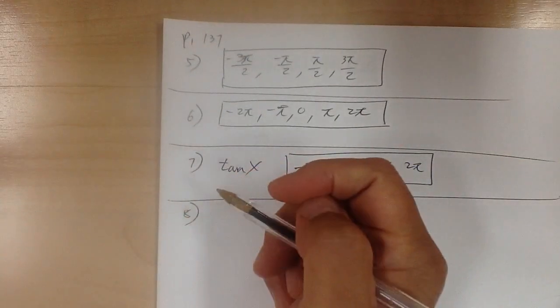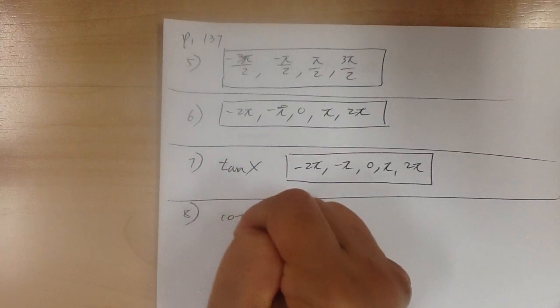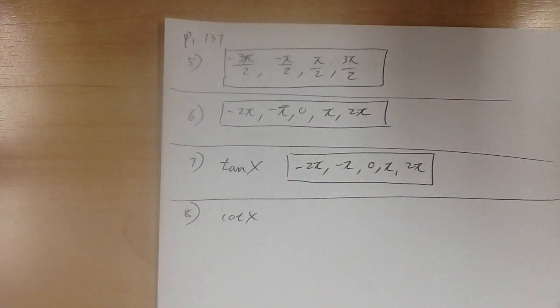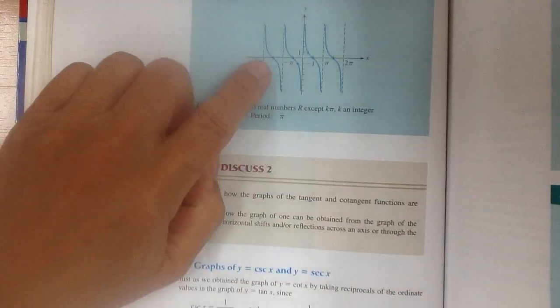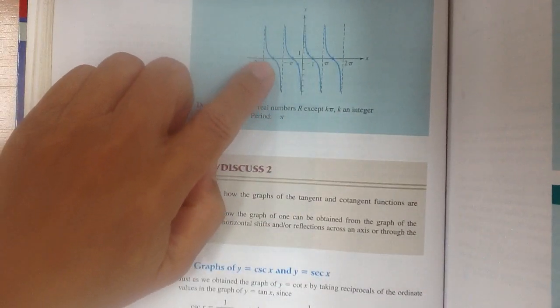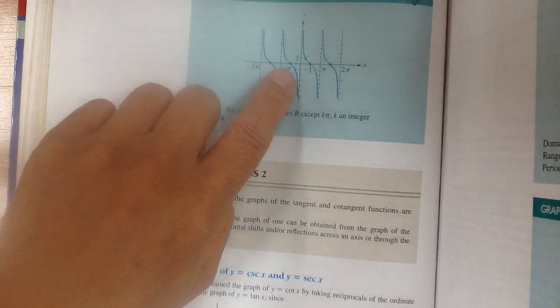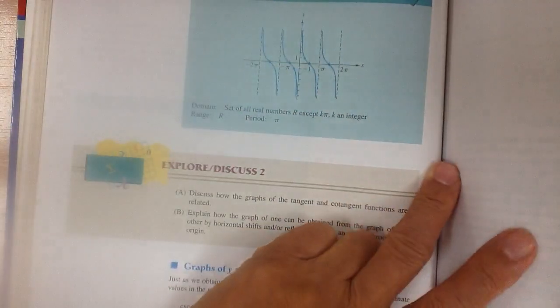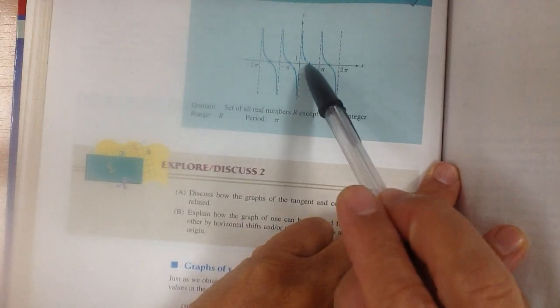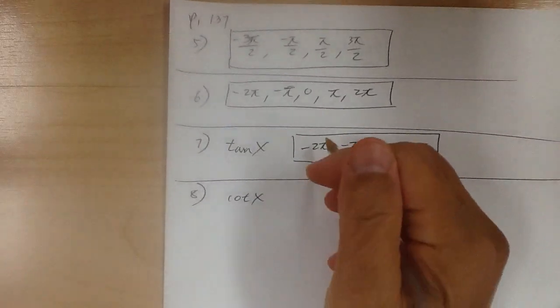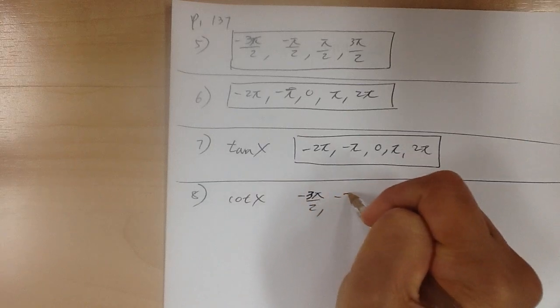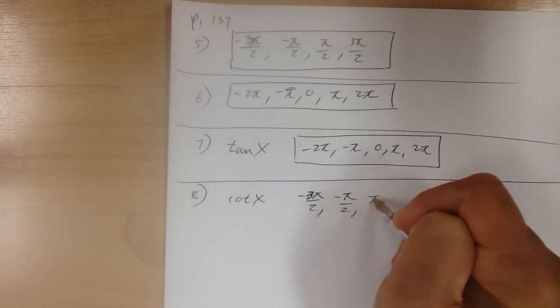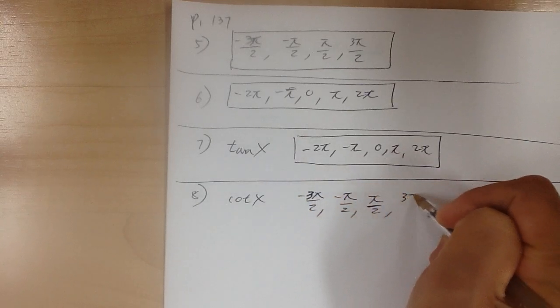For number 8, cotangent — looking at the cotangent graph, you have to be careful where the asymptotes are. The x-intercepts are negative 3pi over 2, negative pi over 2, pi over 2, and 3pi over 2.